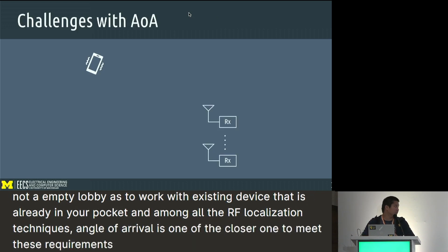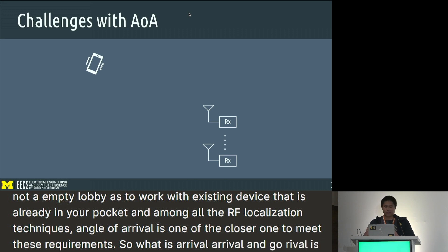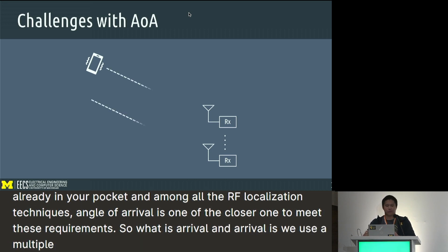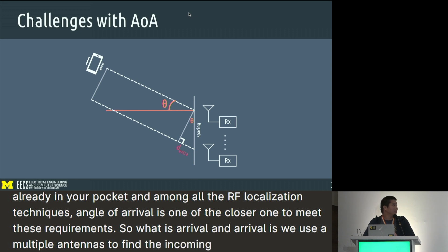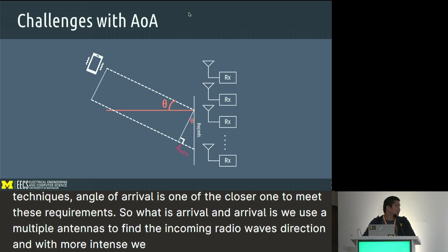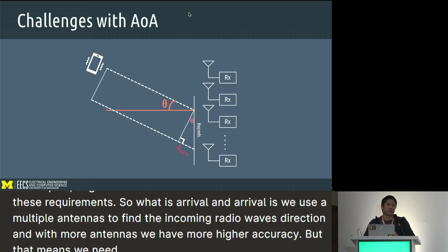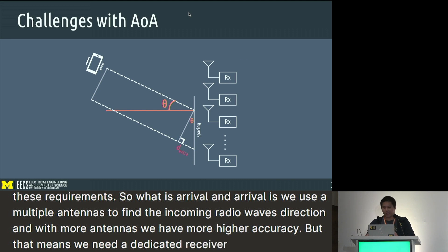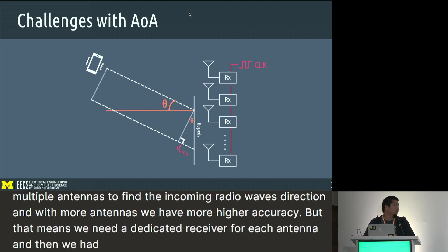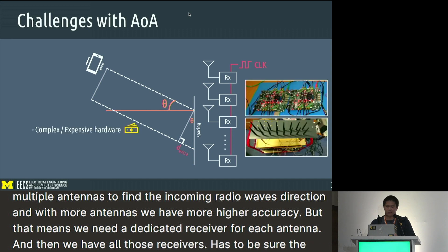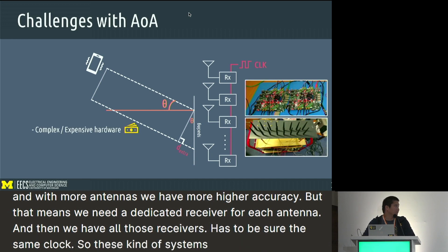So what is angle of arrival? Angle of arrival uses multiple antennas to find the incoming radio wave's direction. With more antennas, we have higher accuracy. But that means we need a dedicated receiver for each antenna, and those receivers have to share the same clock. So these kinds of systems are super complex and super expensive.